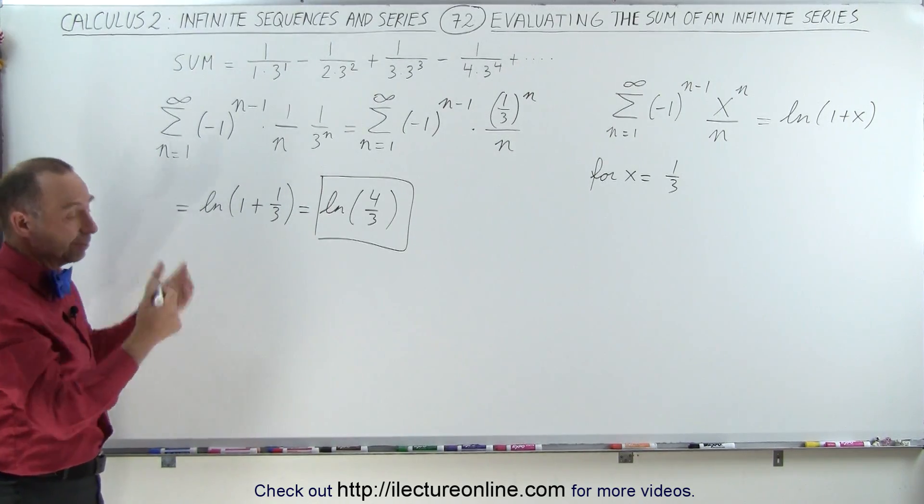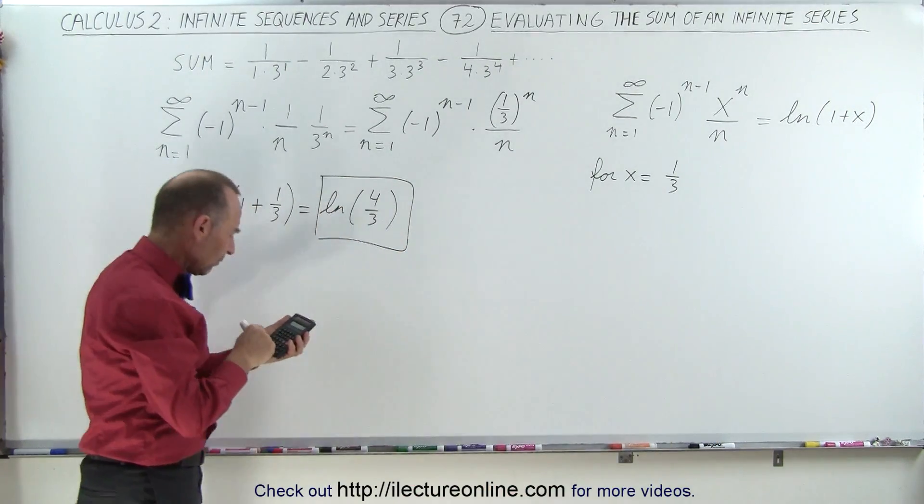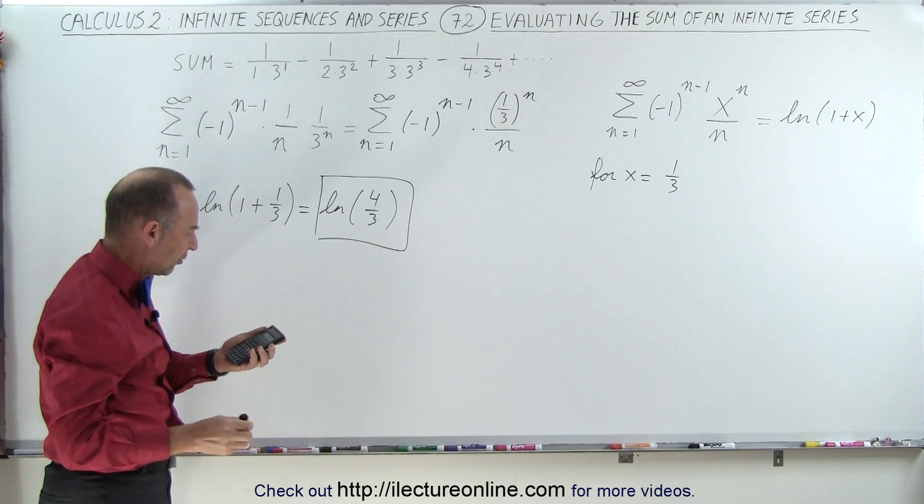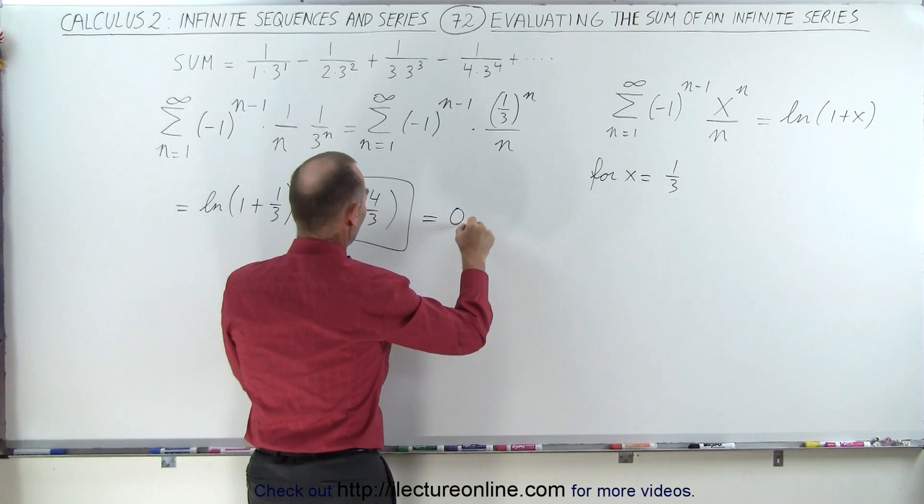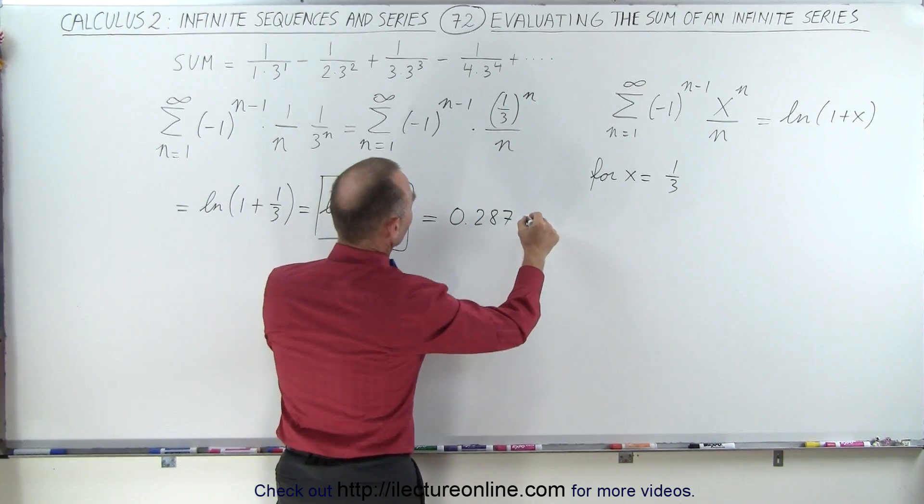And then, of course, we just need a calculator. We can figure that out. What that is equal to? 4 divided by 3. Take the natural log of that. And it's 0 point, well, let's say to 5 decimal places, it would be 0.28768.